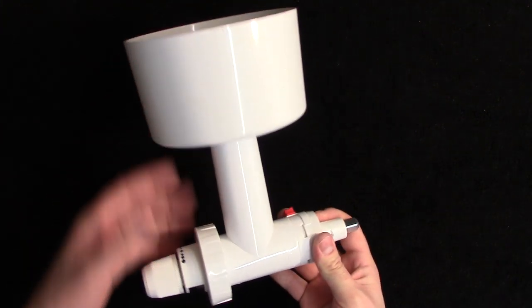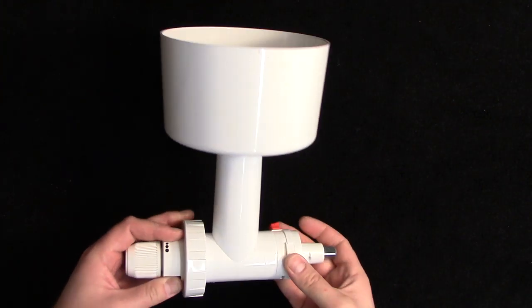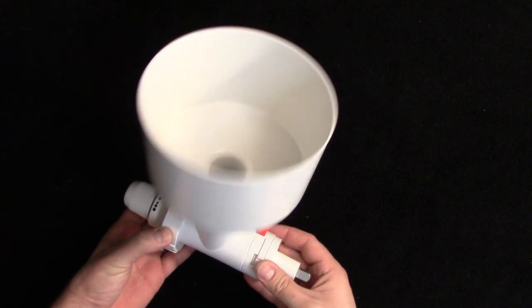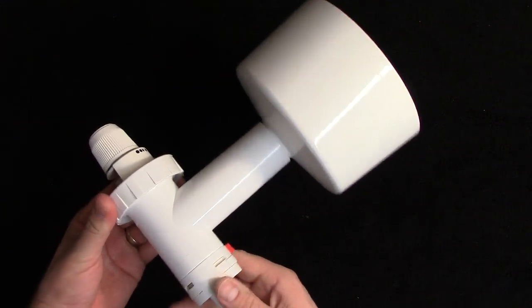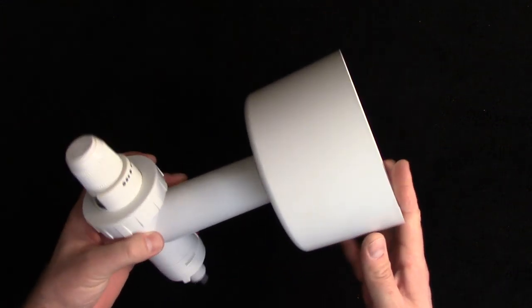Okay, this here is the Messerschmitt grain mill for the KitchenAid mixers. It just attaches easily right here. There's some things I like about this and there's some things that I don't like about it.